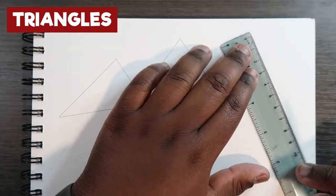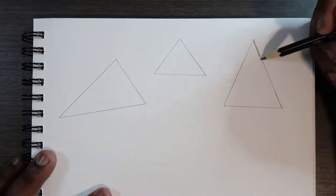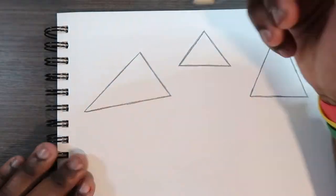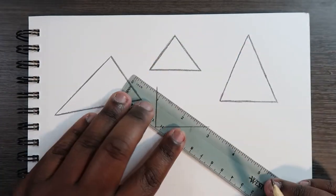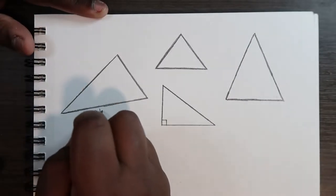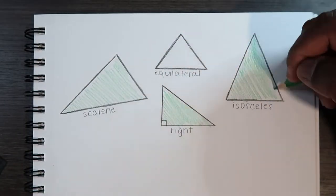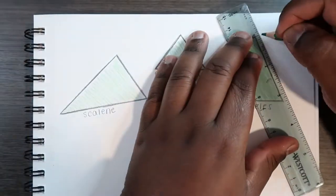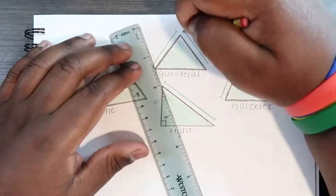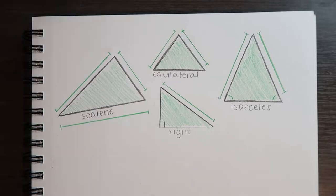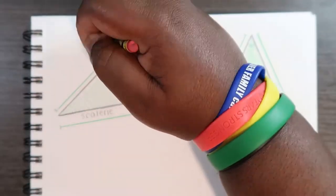Another math concept that I use is trigonometry — that's the study of triangles. I know the different kinds of triangles: scalene, isosceles, equilateral, right, and whatever else. I use these because I usually start off with basic shapes when I'm drawing. Sometimes we start with a right triangle, which has a right angle on it. Or maybe an isosceles triangle — a triangle with two sides the same and one different. But most of the time I do use equilateral triangles.